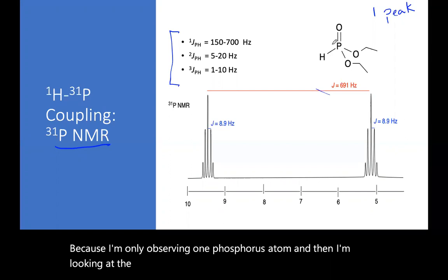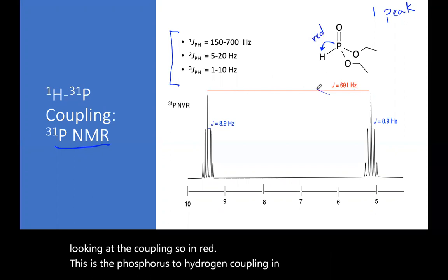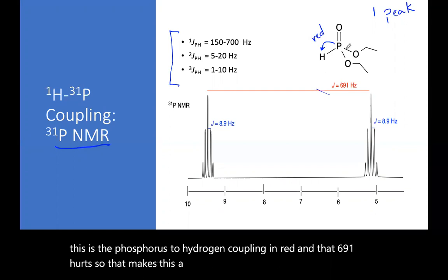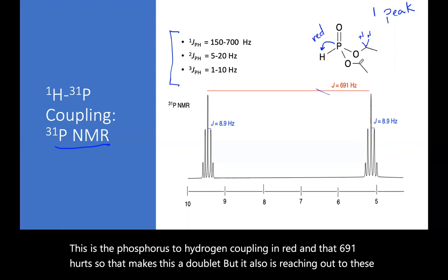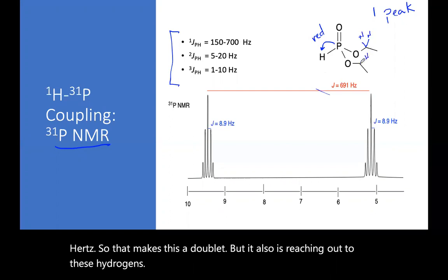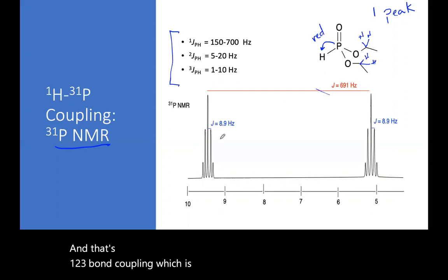And I'm looking at the coupling. So in red, this is the phosphorus to hydrogen coupling in red, and that's 691 hertz. So that makes this a doublet. But it also is reaching out to these hydrogens. And that's one, two, three bond coupling, which is about 5 to 20 hertz. In this case, it's 8.9 hertz.